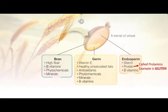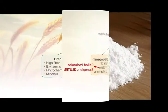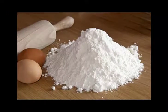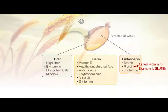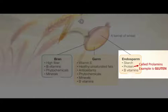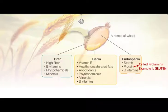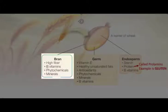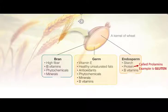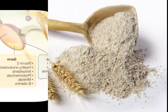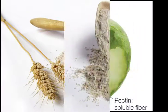Another part is the endosperm — this is the source for actual white flour. It does have protein, carbs, vitamins, minerals, and some soluble fiber in it. The proteins in there are called prolamins, and they include gluten. You may have heard of celiac disease and gluten sensitivity — those conditions are related to this protein. The bran is the outermost coat of the wheat kernel; it has insoluble fiber along with other nutrients. Whole wheat flour includes the bran.